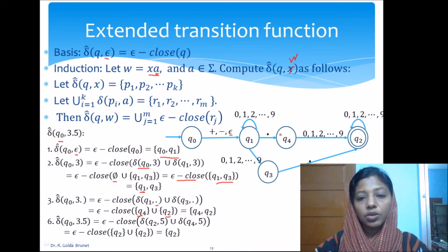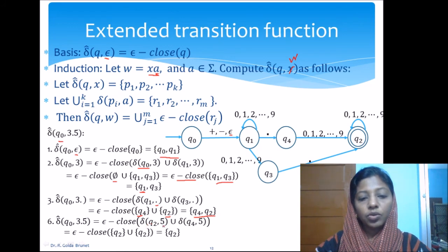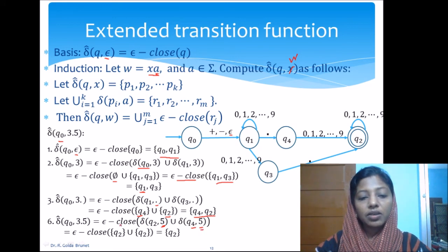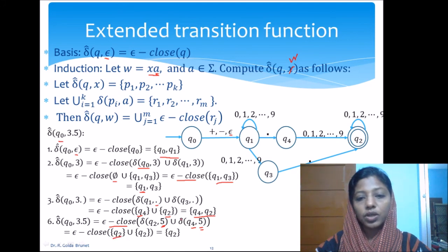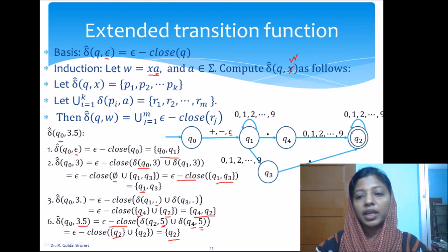Finally, delta-cap(q₀, '3.5'): from q₂ on a digit we go back to q₂, and from q₄ on a digit we go to q₂. Taking the union and applying the epsilon closure of q₂, which is {q₂} itself, the result is {q₂}. So when we start from q₀ and accept the input string '3.5', we end at state q₂.